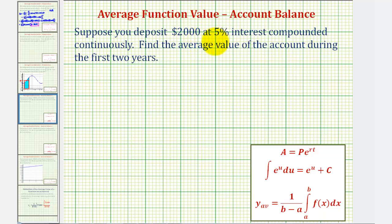Suppose you deposit $2,000 at 5% interest compounded continuously. Find the average value of the account during the first two years.